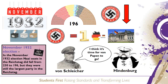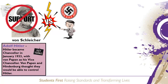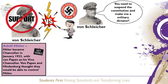At this point von Schleicher turned on von Papen and persuaded Hindenburg to remove him as chancellor. Hindenburg was struggling to find a strong government but still refused to make Hitler chancellor. Von Schleicher had told Hindenburg that the November election results showed support for the Nazi party was fading. In desperation, Hindenburg appointed von Schleicher as chancellor. However, von Schleicher's chancellorship had no real political support, and with Hitler and the Nazis now against him, he was unable to govern. In the face of this, von Schleicher asked Hindenburg to suspend the constitution and make him head of a military dictatorship. Hindenburg refused.